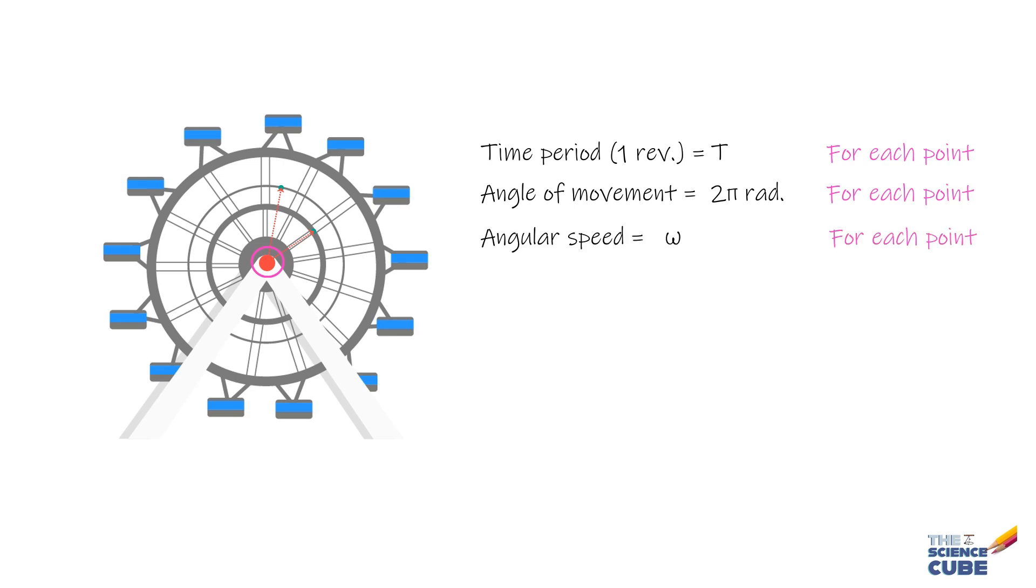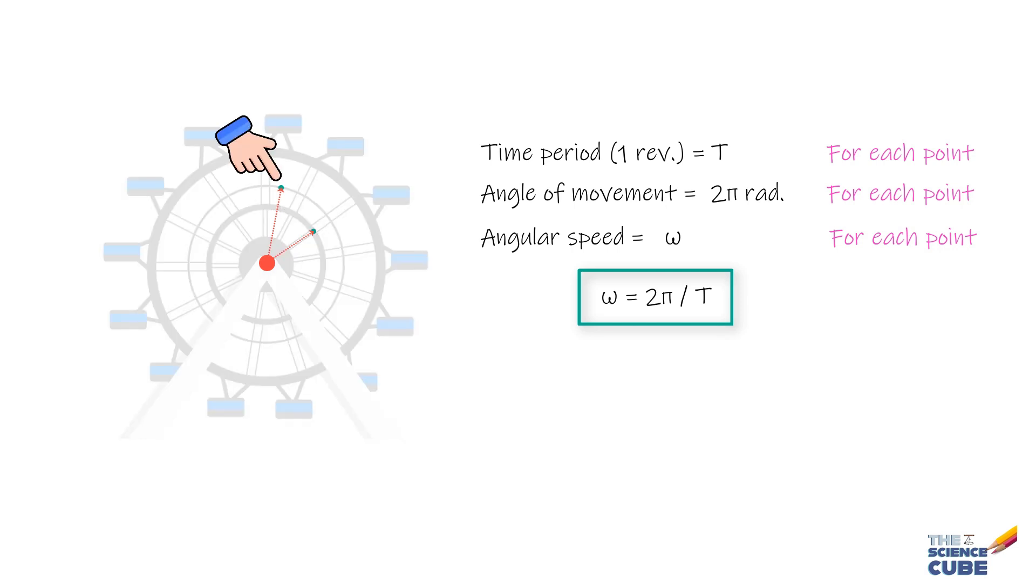Because omega is nothing but the angle through which a body moves divided by the time it takes to move through that angle. However, you will notice that the farther a particle is from the center, the larger the value of the circumference of its circle, and so its linear speed v would be higher.